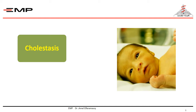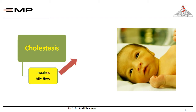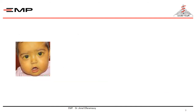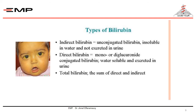Cholestasis is a Greek word meaning stoppage of bile, so in cholestasis there is impaired bile flow, with the resultant retention of all the substances that should be excreted in bile, in addition to lack of bile function. Clinically, the patient will present with jaundice due to a high level of bilirubin. There are two types of bilirubin — indirect and direct. Elevation of either will manifest as jaundice. If the direct bilirubin is more than 20% of the total or more than 2 mg per deciliter, this is cholestasis or direct hyperbilirubinemia.